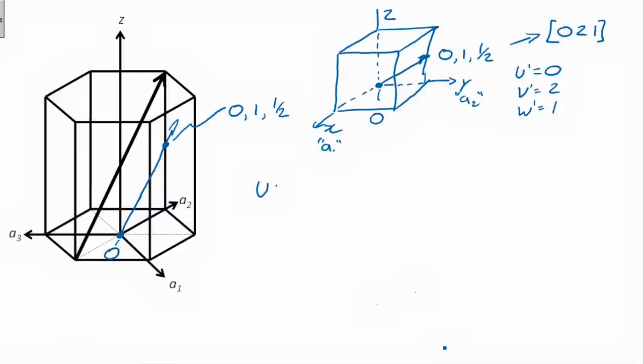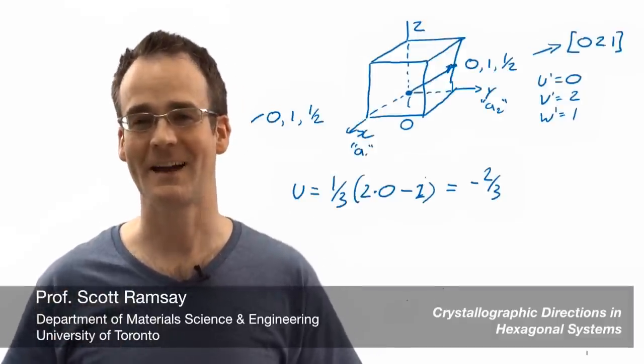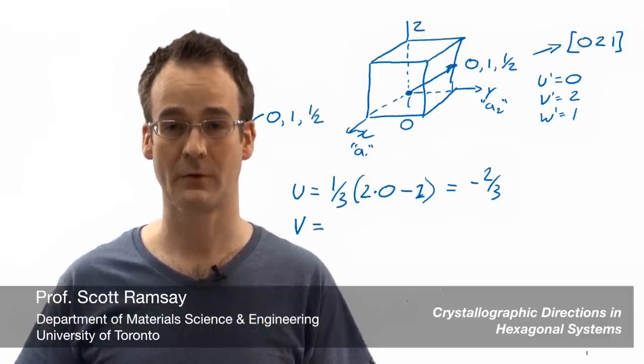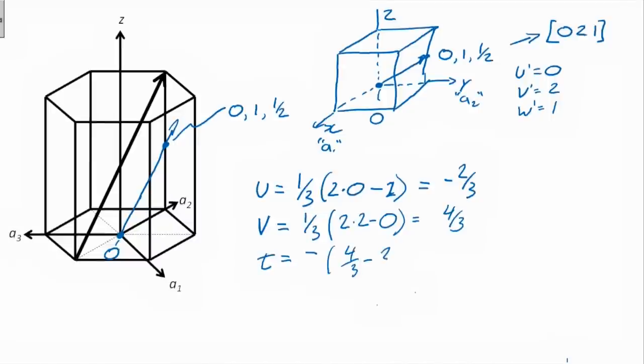So then we just have to convert from U prime, V prime, W prime to UVTW four index system. So let's do that. And if we want to convert to U, we've got one third times two times U prime, which is zero, minus V prime, so minus two, so negative two thirds. And then we've got V being one third times two times two minus zero, so that's four thirds. And then we sum U and V and make it all negative. So we've got four thirds minus two thirds is two thirds made negative, so that's negative two thirds. And then W is just W prime, which is just one.